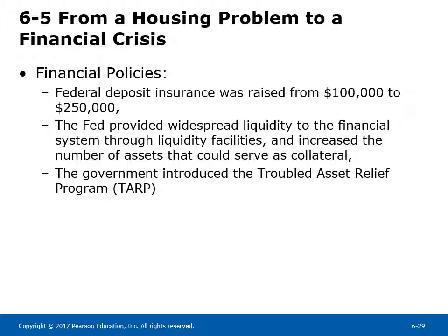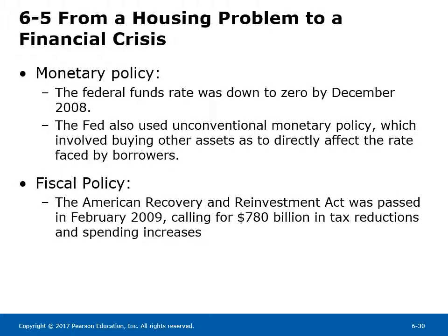Financial policies included raising Federal Deposit Insurance from $100,000 to $250,000. The Fed provided widespread liquidity to the financial system through liquidity facilities and increased the number of assets that could serve as collateral. The government introduced the Troubled Asset Relief Program (TARP). For monetary policy, the Federal funds rate was brought down to zero by December 2008, and the Fed used unconventional monetary policy — buying other assets to directly affect the rates faced by borrowers. For fiscal policy, the American Recovery and Reinvestment Act was passed in February 2009, calling for $780 billion in tax reductions and spending increases.